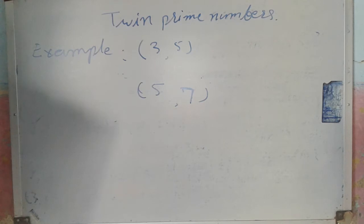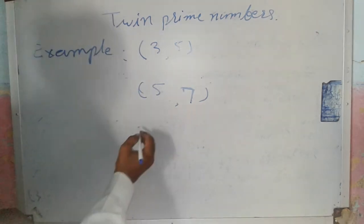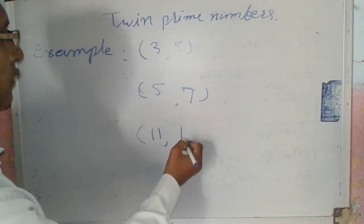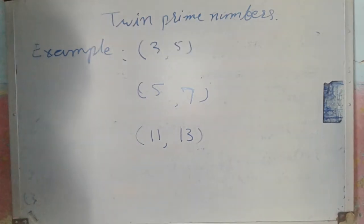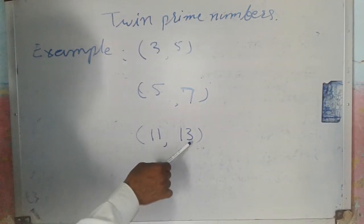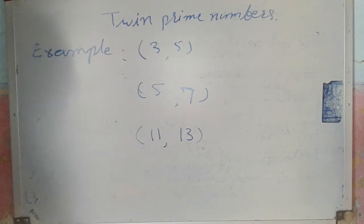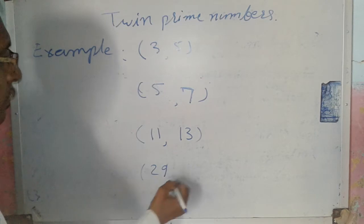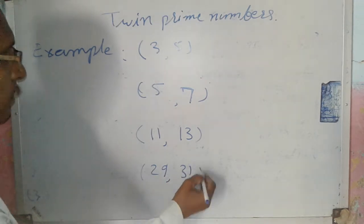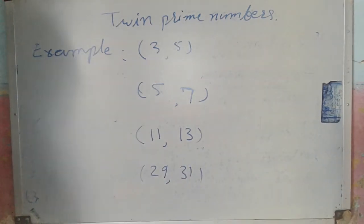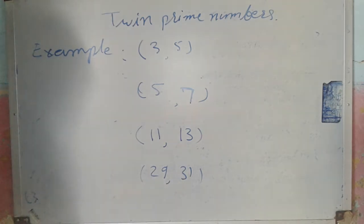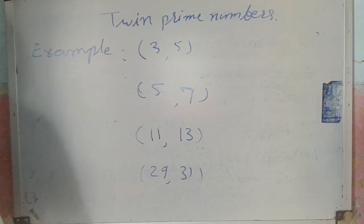Another example is 11 and 13: both are prime numbers and their difference is 2, so they are twin prime numbers. Similarly, 29 and 31 are also twin prime numbers, with a difference of 2.